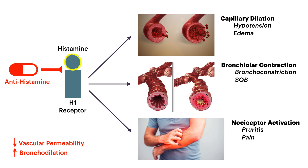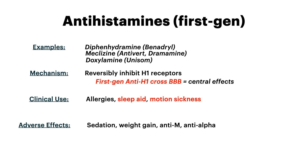That's why antihistamines are used in allergy and respiratory conditions. Now, when talking about antihistamines, there are two generations: first generation and second generation. The highest yield takeaway is that first generations cross the blood-brain barrier and second gens do not. Because the first generation antihistamines cross the blood-brain barrier, they can have central effects — they induce sleep, cause sedation, and help with motion sickness, nausea, and vomiting. Examples here are diphenhydramine, meclizine, and doxylamine.